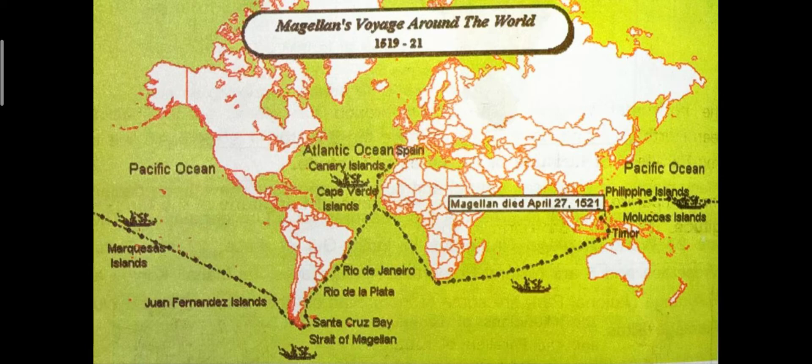The voyage started with 5 ships and a crew of 270, but only 18 members survived. Magellan was not among the survivors. Survivor means a person who continues to live. The voyage proved that the earth was round.